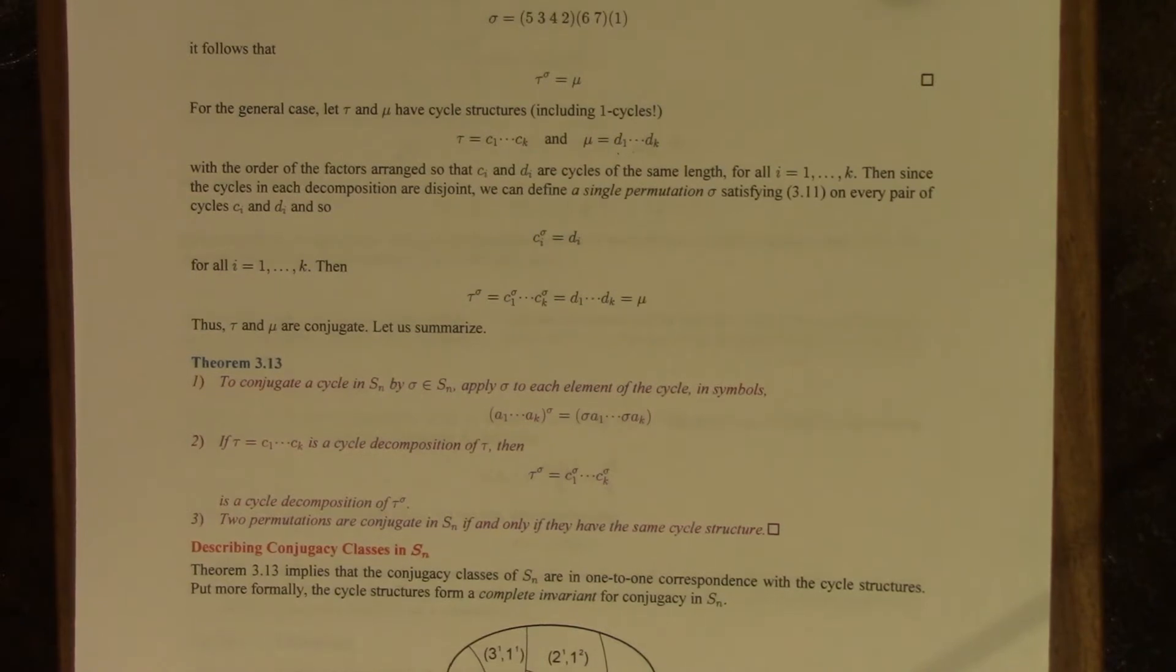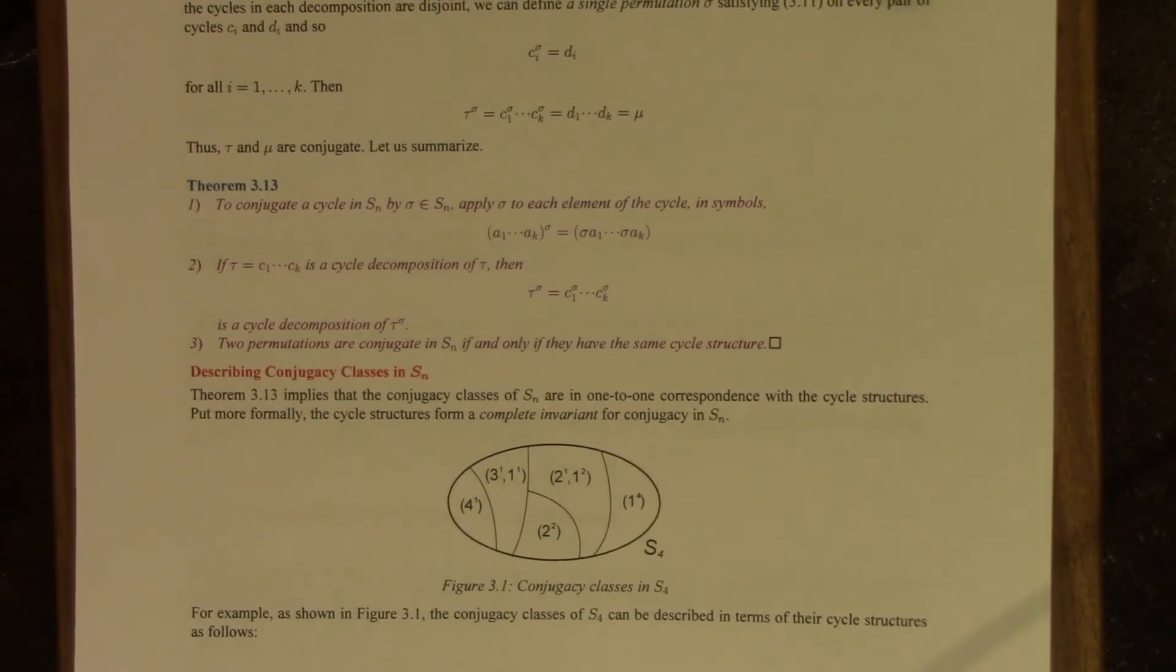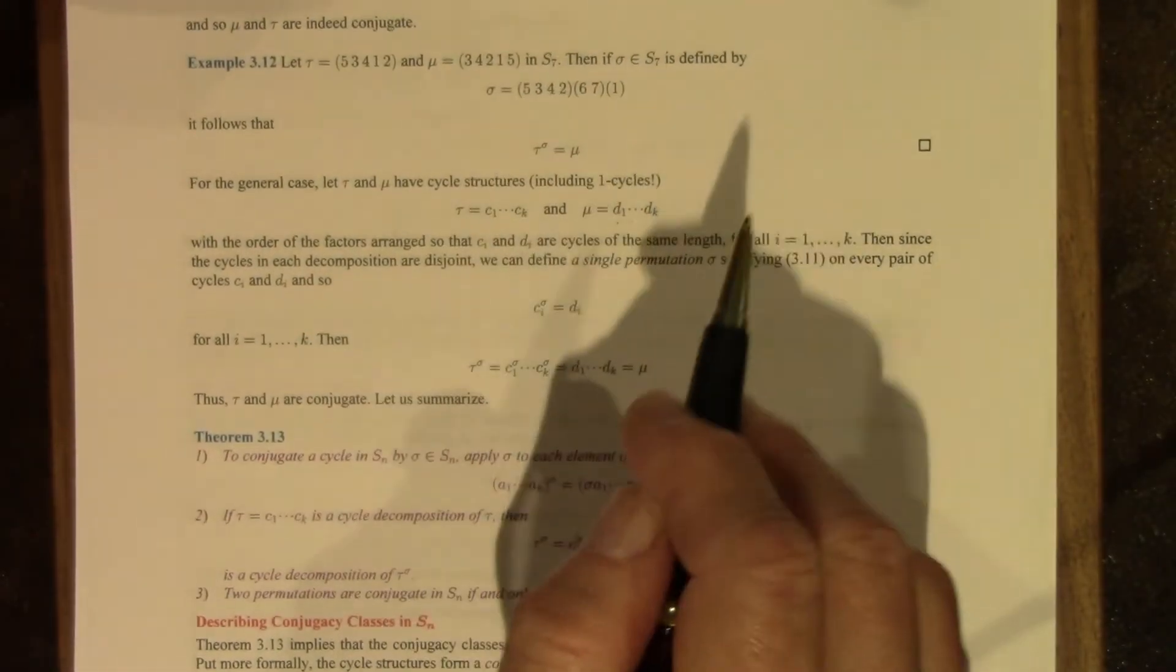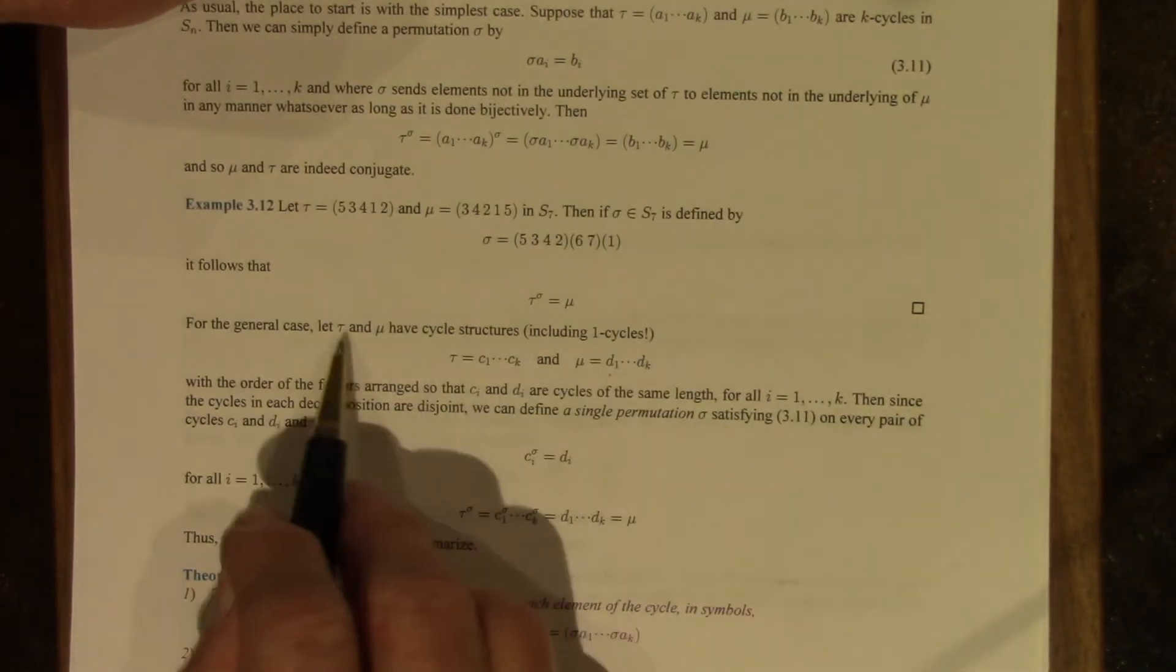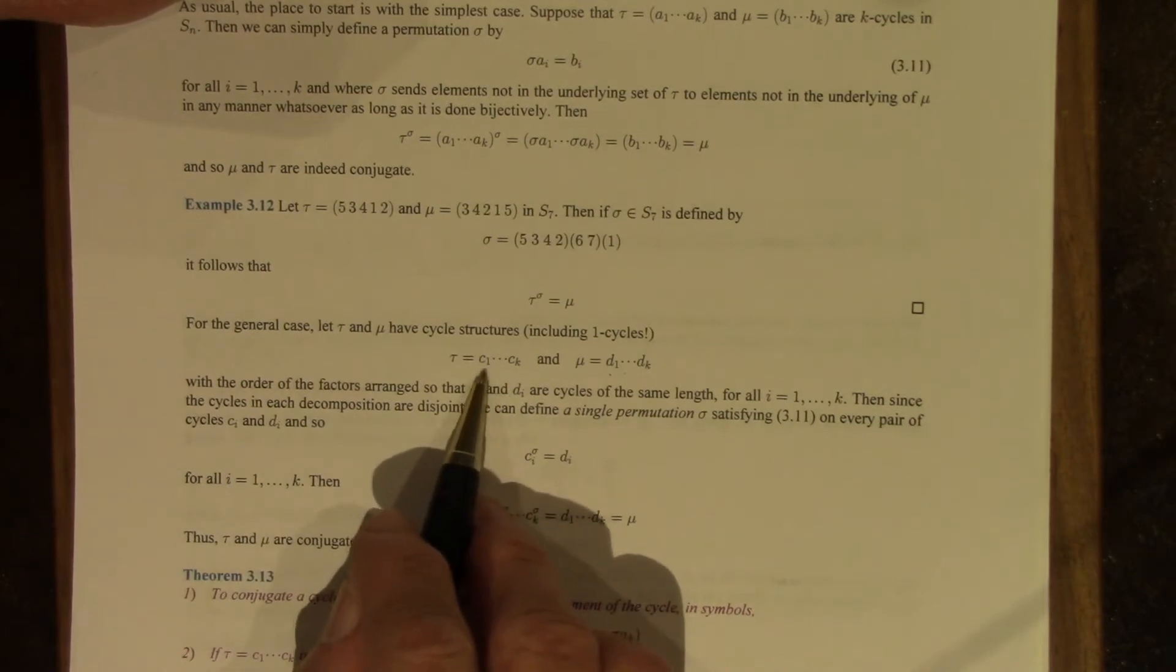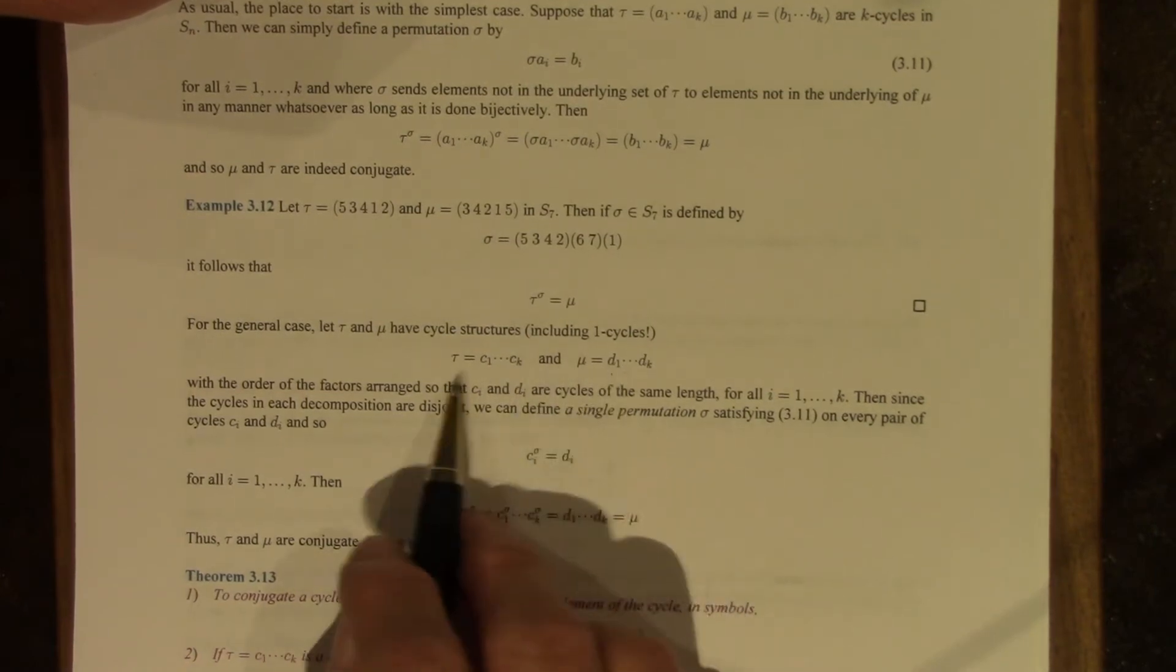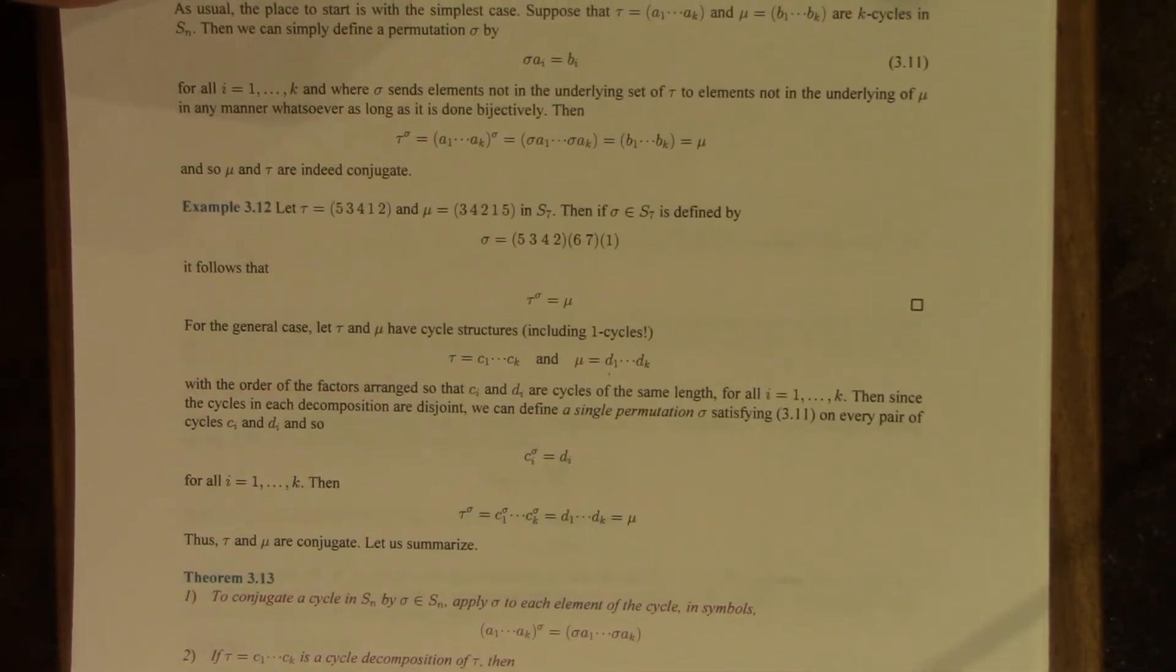So you might want to fiddle with this a little bit if it's not quite clear. It's a little bit subtle, so it might take a little bit of time to digest. Maybe I should have included an example, but I didn't, so my bad. But it would be good practice for you to create your own example, frankly. All you need to do is maybe make Tau a product of two cycles or three cycles and mu also, same cycle structure, and see how you'd match everything up. Once you do this once, you'll see immediately what's going on.